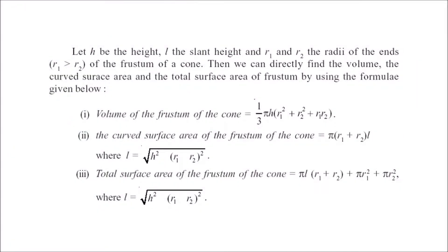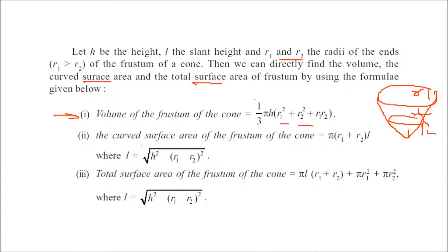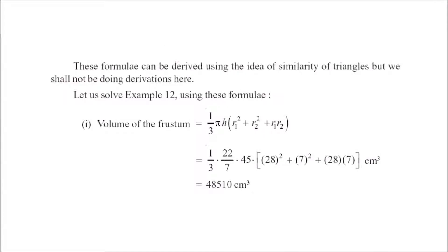So what we have seen: if h is the height, l is the slant height, and r1 and r2 are the radii of the ends of the frustum of a cone, you can directly find the volume, curved surface area, and total surface area using these formulas. Volume = (1/3)π h (r1² + r2² + r1 r2). Curved surface area = π(r1 + r2) l, where l = √(h² + (r1 − r2)²). Total surface area = π l(r1 + r2) + π r1² + π r2². These formulas are derived using similarity of triangles.